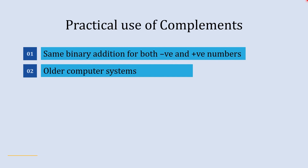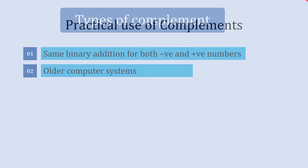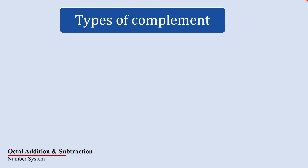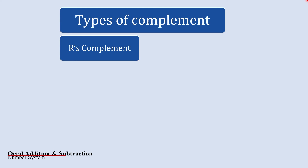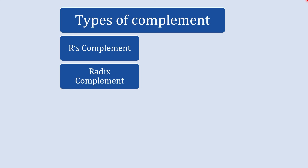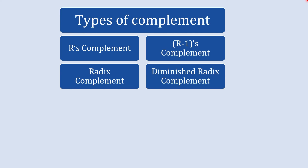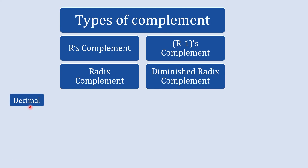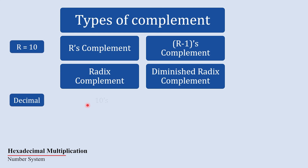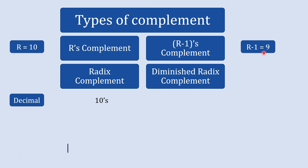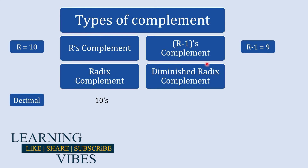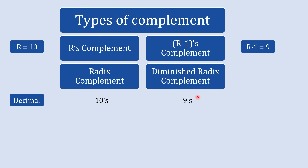These complements are categorized into two types: r's complement, whose full name is radix complement, and r-1's complement, whose real name is diminished radix complement. Taking the decimal number system as an example — its radix R equals 10 — so r's complement is the 10's complement, and r-1's complement is the 9's complement. Whenever we discuss 10's complement or 9's complement, we are talking about the decimal number system.